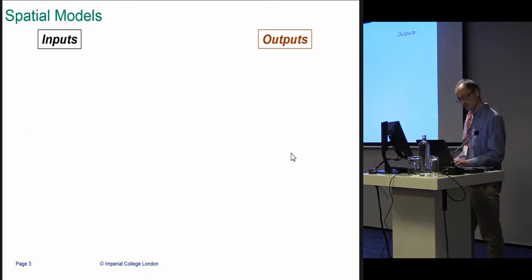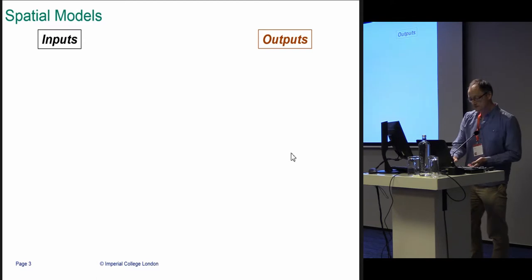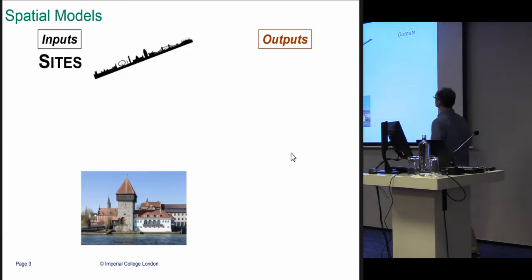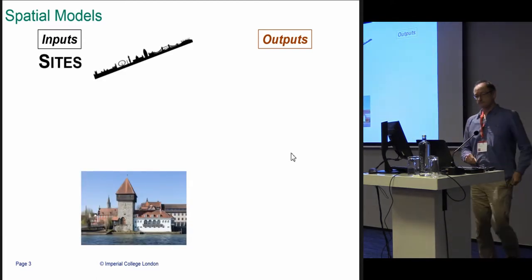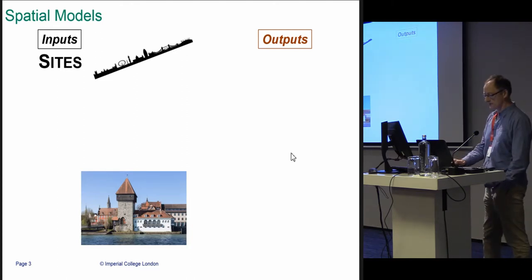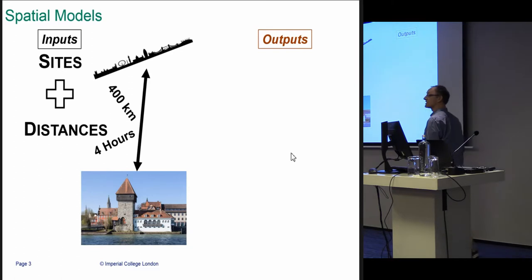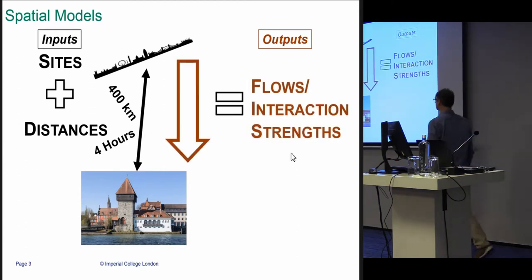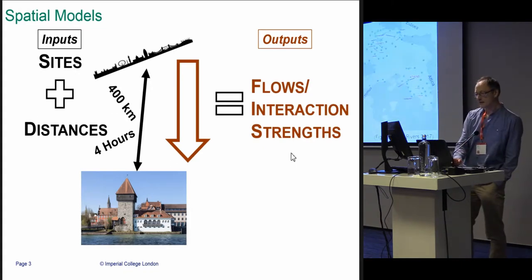What are the models I'm talking about? Well, these are spatial models, so we've got some sort of set of inputs, which for us will just be the sites. We're going to try and link those together with distances, so all we're going to include is geography—all those other factors we're not going to include. We're going to see how far you can go with just the geography. The outputs here will be some sort of flows or interaction strength between the various sites that you have.